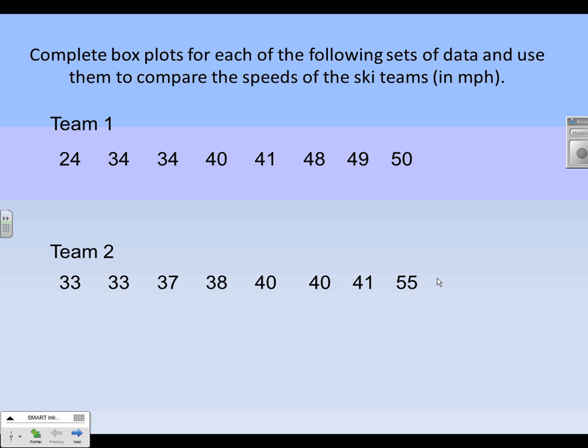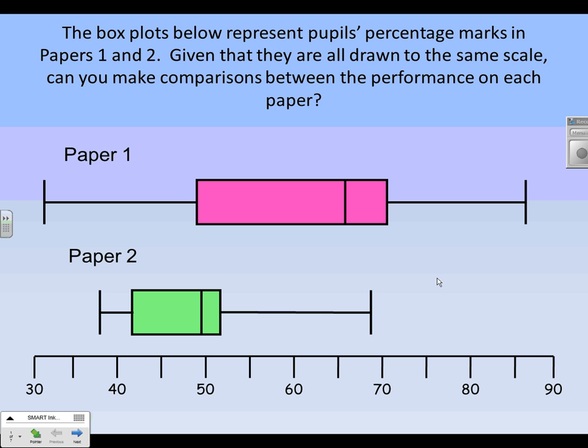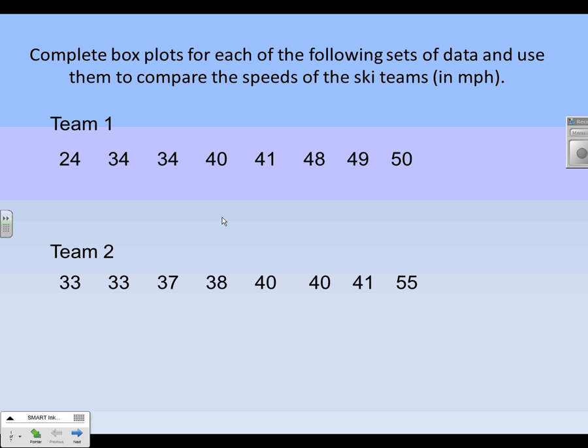Now the next slide, this slide here, that's an example. I want you to have that in your notes under the title Example: complete the box plots for each of the following sets of data and use them to compare the speeds. So draw the box plots and also compare after. And I want you to draw them both on the same scale like this question here, like the scale at the bottom. Have both box plots on the same scale, makes it much easier to compare. So pause the video now, have a look at that.